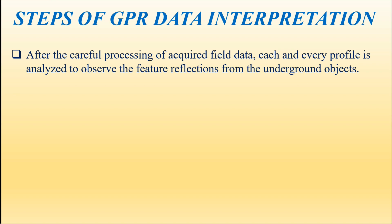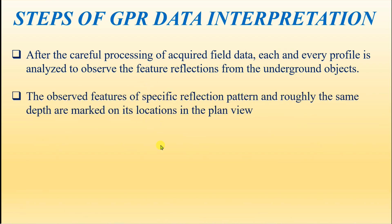The first step: after careful processing of the acquired field data, each profile is analyzed to observe the feature reflections from underground objects. After collecting data using the Ground Penetrating Radar instrument, you need to use software such as Radon 7 to analyze and observe the feature reflections of underground features and objects.